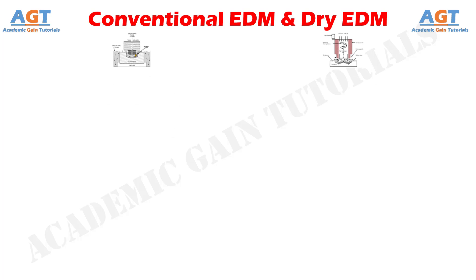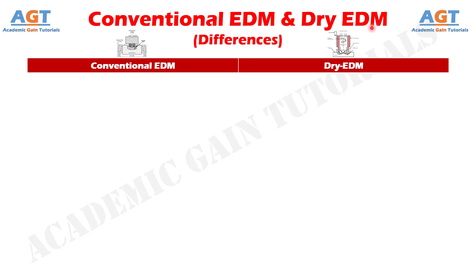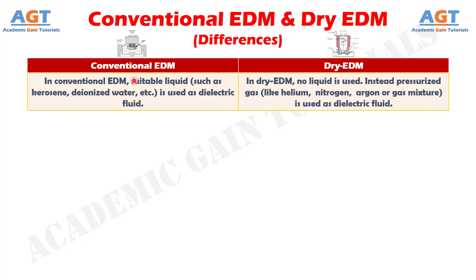Let's look into the basic differences between conventional electric discharge machining and dry electric discharge machining in a tabular form. Difference number 1: In conventional electric discharge machining, a suitable liquid such as kerosene, deionized water, etc., is used as dielectric fluid. Whereas in dry electric discharge machining, no liquid is used; instead, pressurized gas like helium, nitrogen, argon, or gas mixture is used as dielectric fluid.